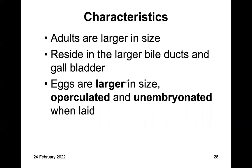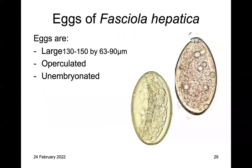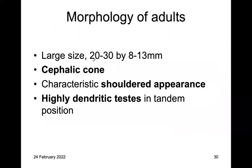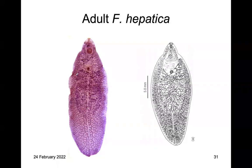Fasciola adults are larger in size and reside in larger bile ducts and gallbladder. The eggs are larger, operculated, and unembryonated when laid — up to 63 by 150 micrometers. The adults can be 20 to 30 by 8 to 13 millimeters. They have a cephalic cone and shoulder appearance, which is characteristic, and highly dendritic testes arranged in a tandem position. The cephalic cone, ventral suckers, and oral suckers are visible features.